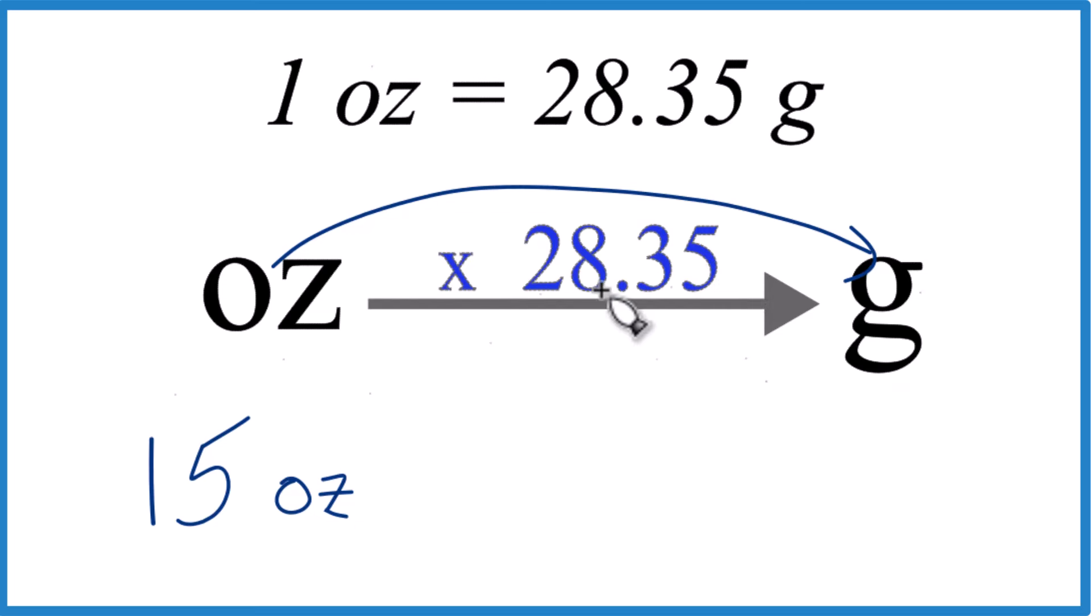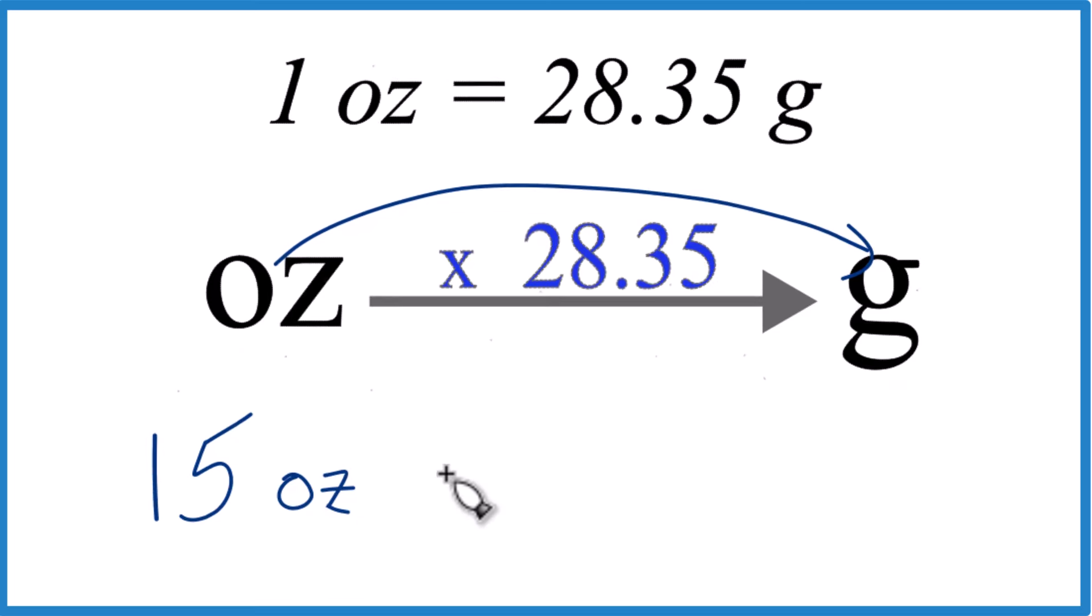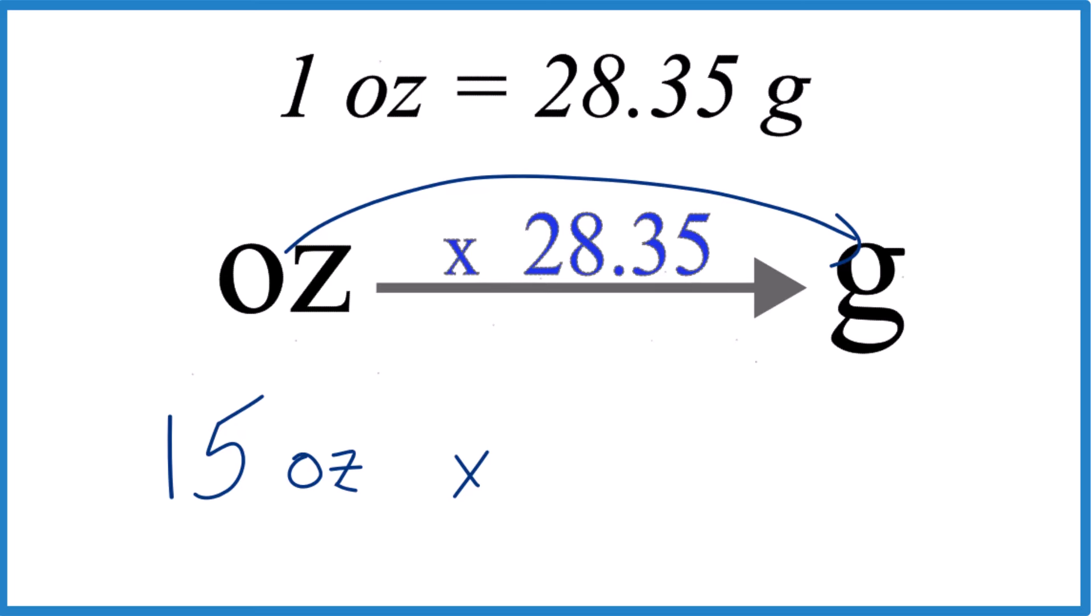Going grams to ounces, you could divide. So we multiply by that 28.35 number there. And you'll note that it's grams per ounce, so 28.35 grams per ounce. Just like we say up here, 28.35 grams in one ounce. That's our conversion factor.